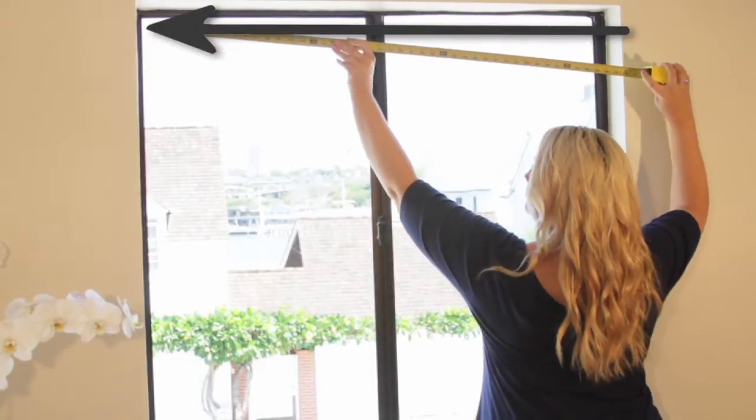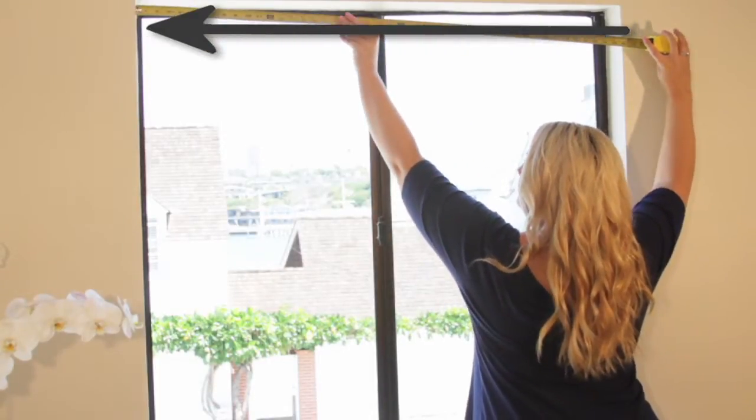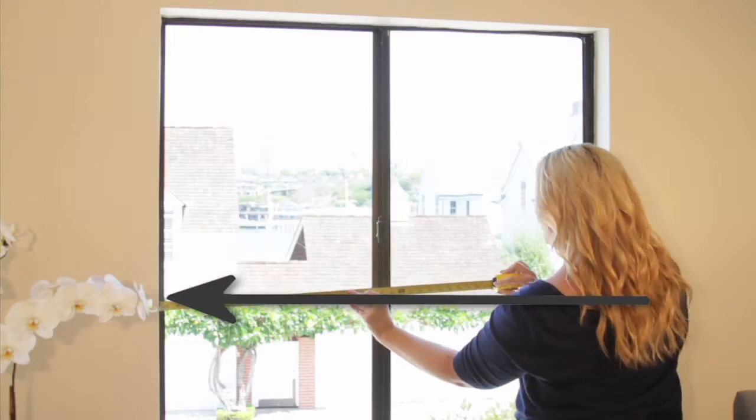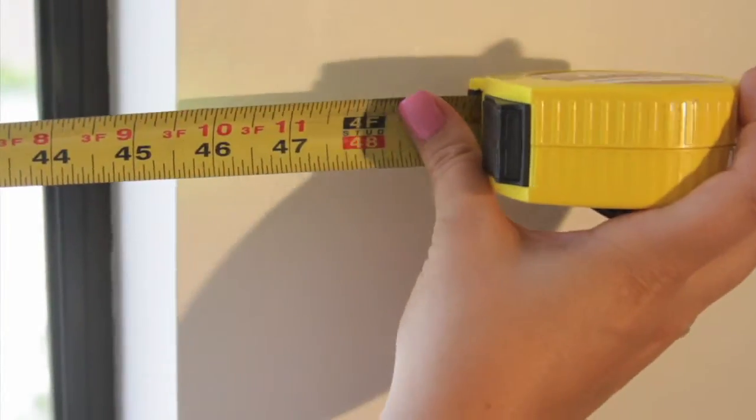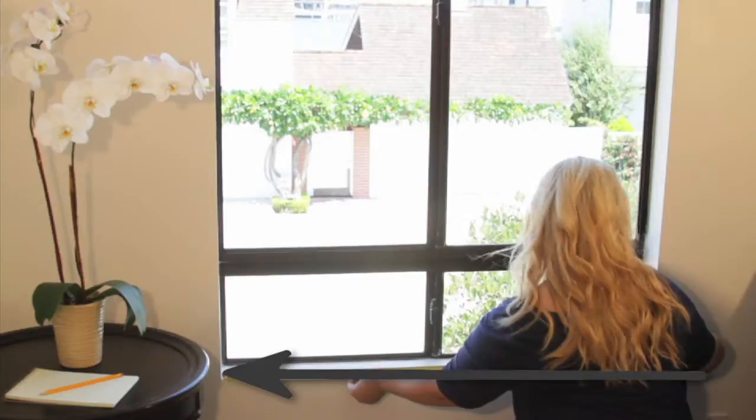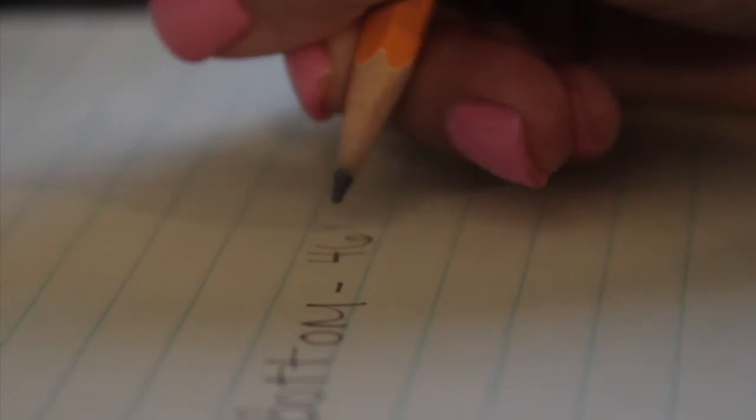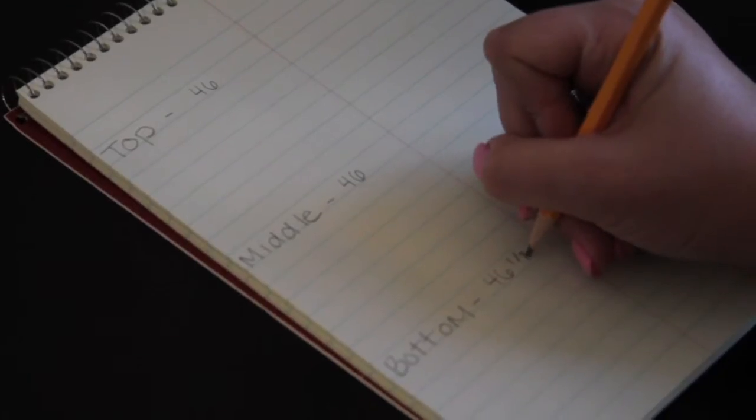Start with measurements across by measuring the top of the window frame horizontally, then take the same measurement for the middle and bottom. Round to the nearest eighth of an inch, then take the smallest measurement of the three. This will be your width measurement.